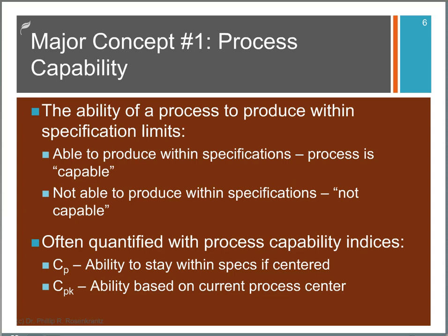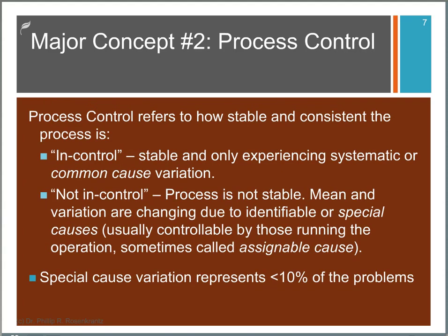Capability is often characterized by two different indices. One is CP. That's the ability to stay within specs if the process were centered properly. And then CPK is the ability to stay in specs based on where the process is currently centered.